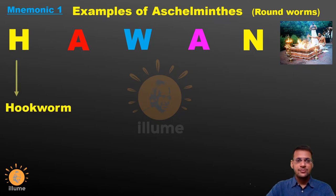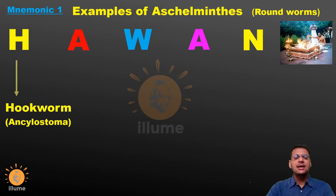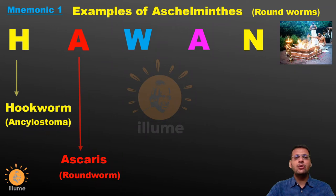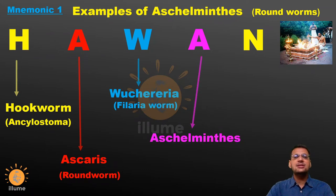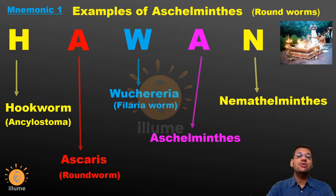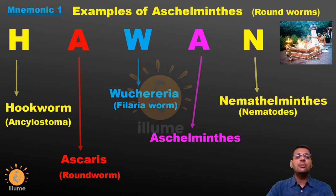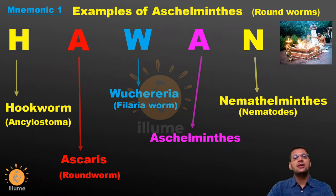H stands for Hookworm, which is also called Ancylostoma. A stands for Aschelminthes — the well-known example is Ascaris, which is a roundworm. W stands for Wuchereria, which is the filaria worm. I am also writing the common names here: Hookworm is Ancylostoma, Ascaris is roundworm, and Wuchereria is filaria worm. The next A is Aschelminthes, included to remind us this mnemonic is for Aschelminthes, and N stands for Nematoda — the other name for Aschelminthes. So basically, the three important examples are Hookworm, Ascaris, and Wuchereria, and the mnemonic is HAVAN.